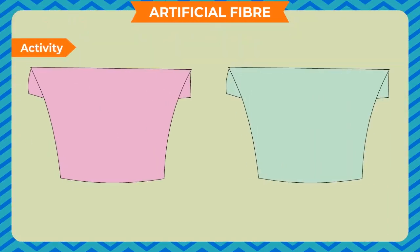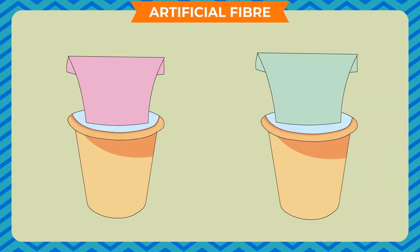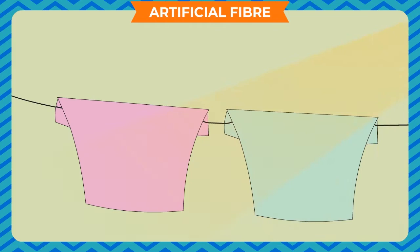Activity: Take two cloth pieces of the same size. One should be from natural fiber and the other from synthetic fiber. Soak these pieces in different mugs, each containing the same amount of water. Take the pieces out after 5 minutes and spread them in the sun for a few minutes. Observe which cloth dries up early.